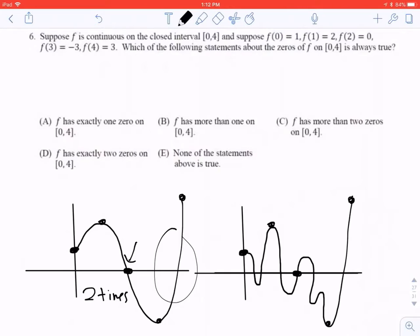So it's at least two times. Let's see. Exactly 1? I don't think so. Exactly 2? Well, it's exactly 2 in the first picture, but I showed in the second picture that it could be more than that. Has more than two zeros? It might. It doesn't have to. The only thing that's certain is that it has more than one.